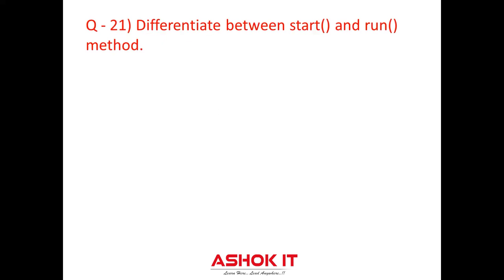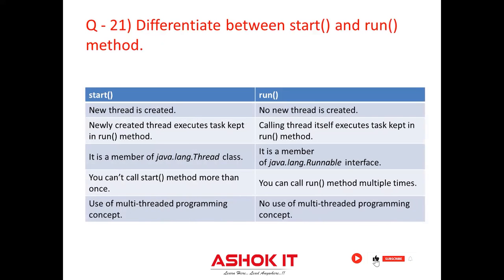Question twenty-one: Differentiate between the start and run methods. When you call start, a new thread is created; when you call run, no new thread is created. The newly created thread executes the task kept in the run method when start is called, whereas the calling thread itself executes the task when run is called directly. Start is a member of java.lang.Thread class where run is a member of java.lang.Runnable interface. You cannot call start more than once, but you can call run multiple times. Start is used in multi-threaded programming whereas calling run directly does not use multi-threading.